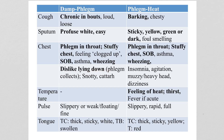A dislike of lying down where the phlegm collects, and being snotty and catarrhal — the bold symptoms are the key symptoms. The pulse is slippery, or weak, floating, and fine if there's a big deficiency, and the tongue coat is thick, sticky, and white with a swollen tongue body.